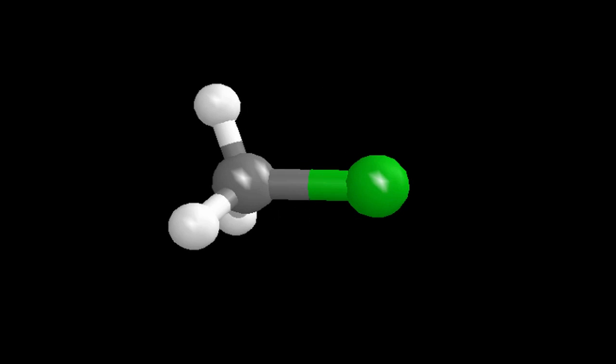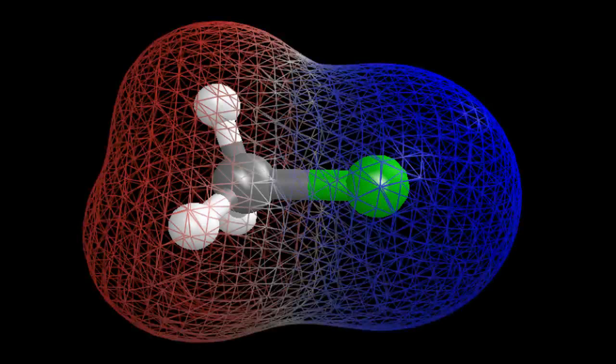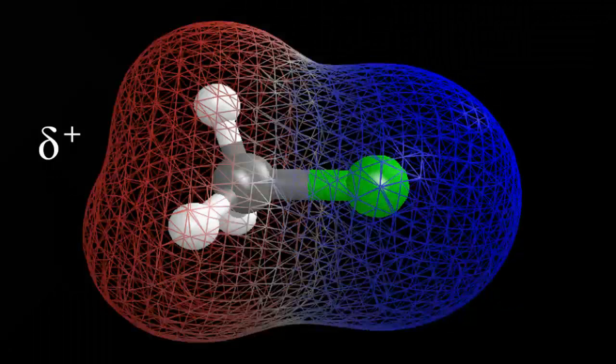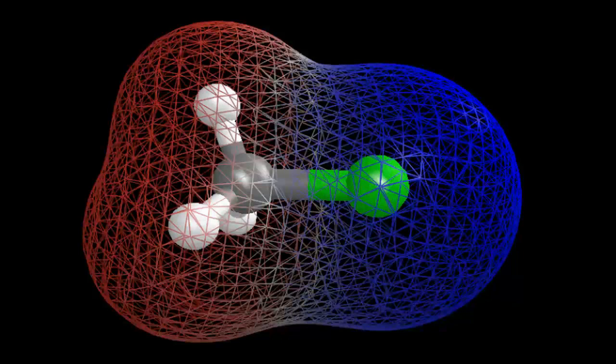If we do that, we can see the red is going to be positive and the blue is going to be negative. So we do have two poles here—two poles, that makes it a polar molecule.